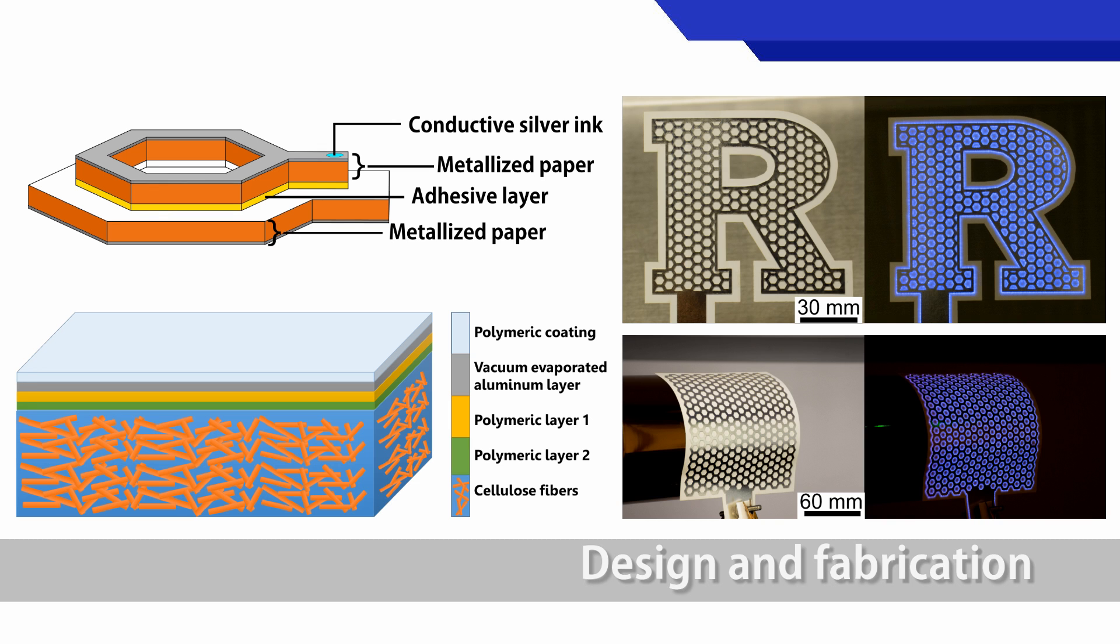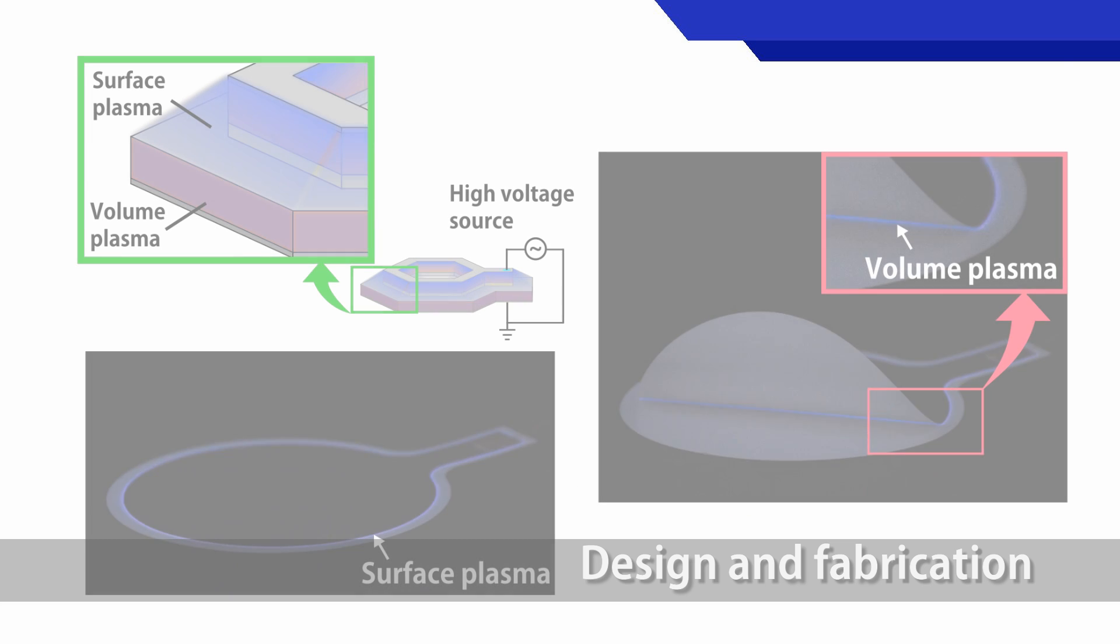This work describes disposable plasma generators made from metalized paper. The fabricated plasma generators with layered and patterned sheets of paper provide a simple and flexible format for dielectric barrier discharge to create atmospheric plasma without a vacuum chamber.